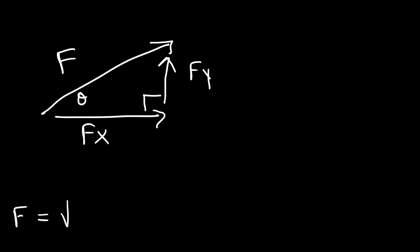When dealing with vectors, you might find these equations useful. So the hypotenuse is the actual vector, f. This is f of x, f of y, and the angle of theta. Now, if you have the x and y components, and you need to find f, you can use this equation. It's based on the Pythagorean theorem. If you need to find the components, you can use this.